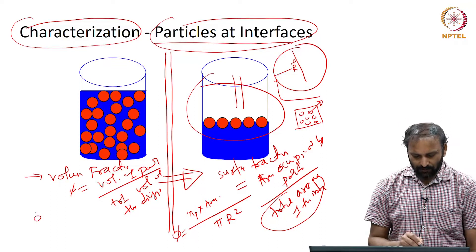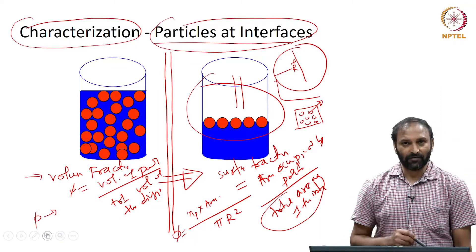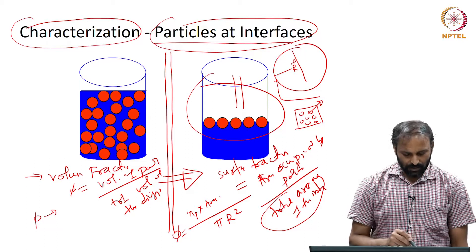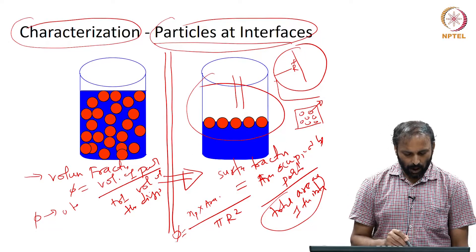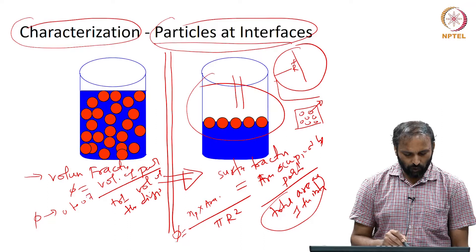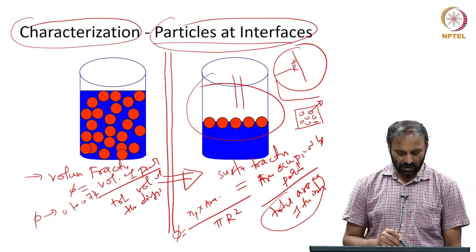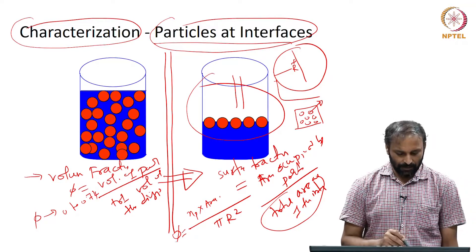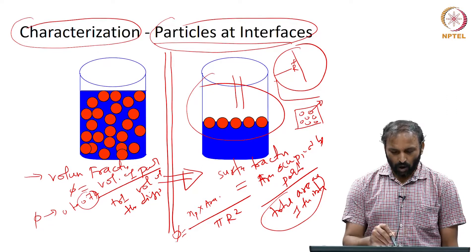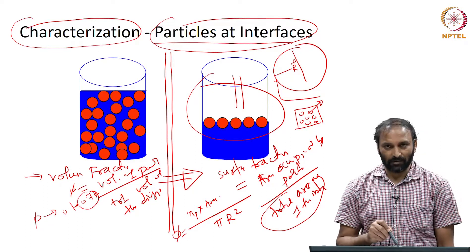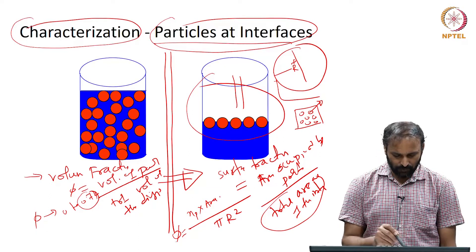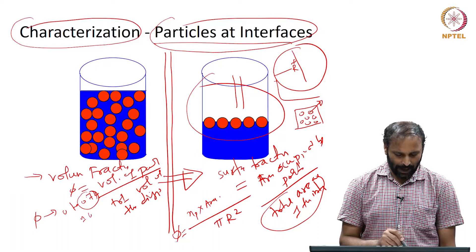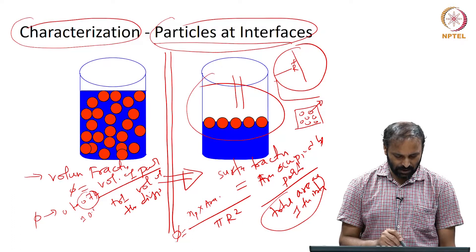A typical value of phi can vary from 0 to about 0.74 if you work with spherical particles, where 0.74 corresponds to when all the particles pack in the form of a crystal. If the particles are randomly distributed in the fluid, you can go to a value as high as 0.64.